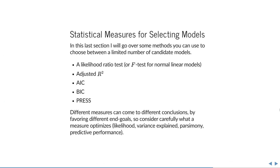With Occam's razor explained, this last section covers some methods to choose between a limited number of candidate models. Some pursue parsimony, others maximize variance explained or likelihood — the chance that your model could produce your sample — and others optimize predictive performance. None of these is necessarily better than the other; they can all come to different conclusions. You should first consider what you're using your model for, and then choose the right measure.